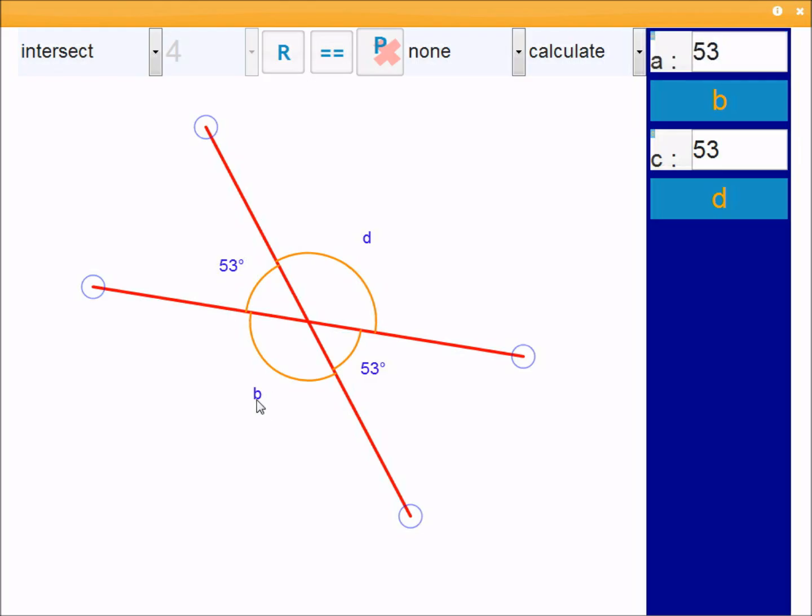To work out B, you can point out that this is a supplementary angle. You can work out 53, it's going to be another 7 to make 60, 27, 127. And D is vertically opposite. So that's going to be 127.